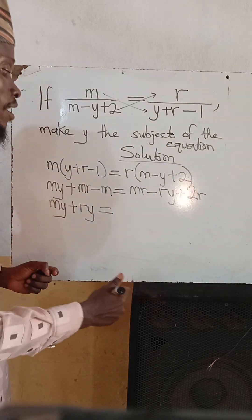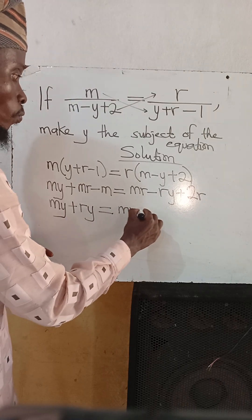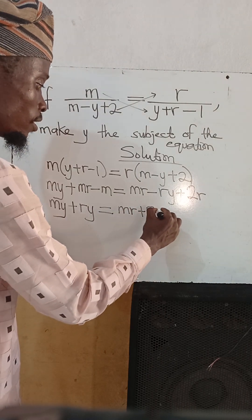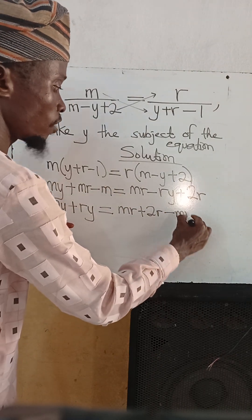Let all other terms join the right hand side. So I have mr there already, plus 2r already, then minus mr. The plus changes to minus, minus mr.